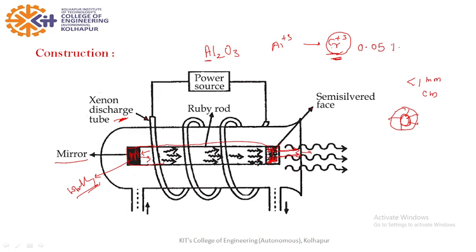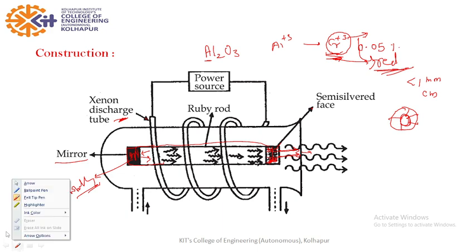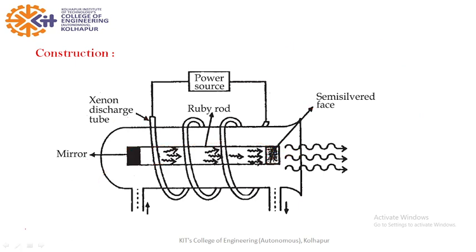Chromium is the active center and we know the color of ruby is red. Now why is it red? Because when chromium atom is excited to higher energy state, it gives spontaneous emission. By spontaneous emission it gives red light and therefore it is naturally red in color.